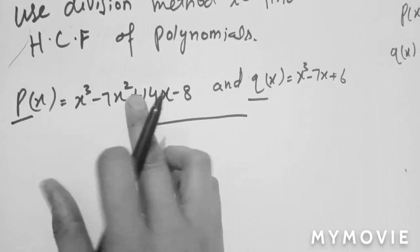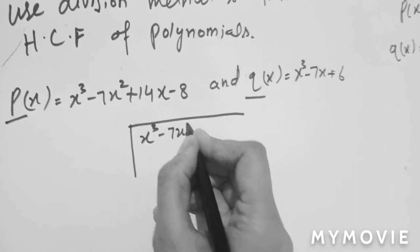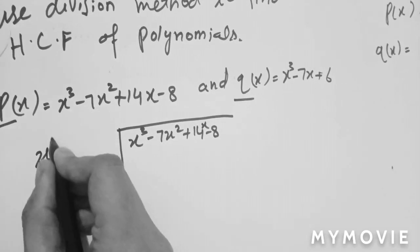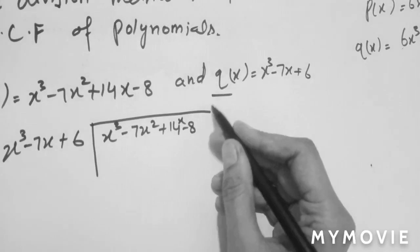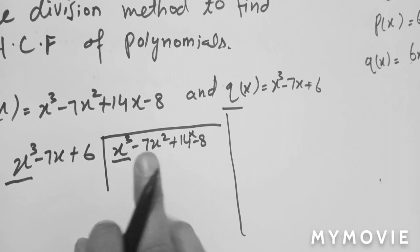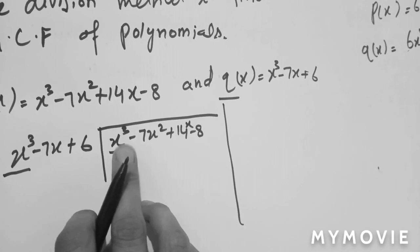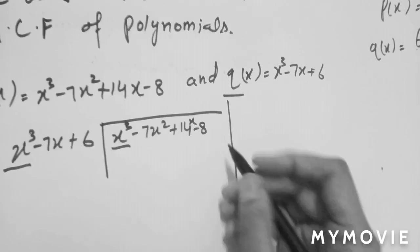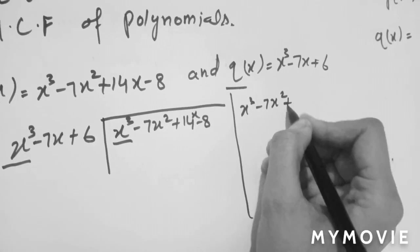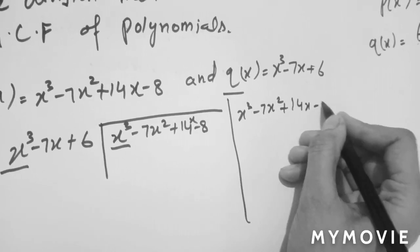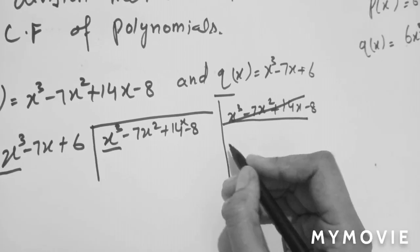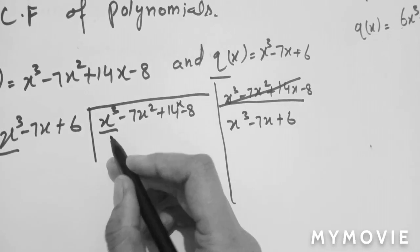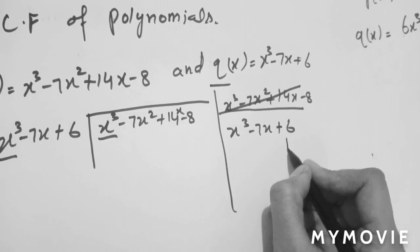We will write p(x) on the inner side of the division: x³ - 7x² + 14x - 8. And q(x) will be written on the outer side: x³ - 7x + 6. Now the method is to divide: we will make the first term from the first term of the outer side polynomial. The first term is x³ and x³ is also here.